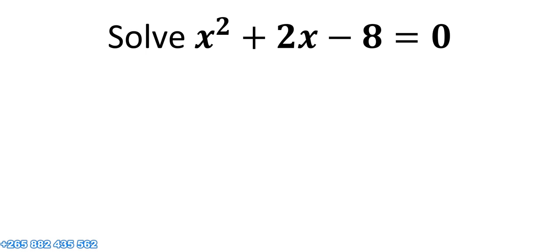Let's see how we can solve this problem. The question reads: solve x squared plus 2x minus 3 equals 0. Looking at this problem, we will solve it using the factorization method, completing the square, and the quadratic formula.